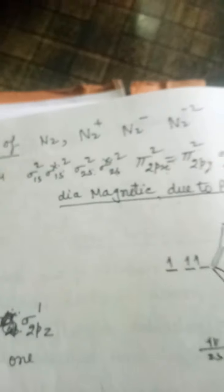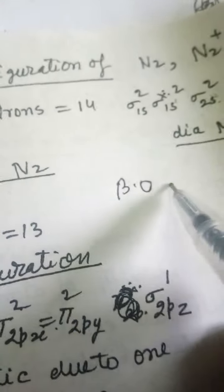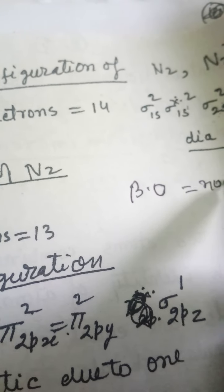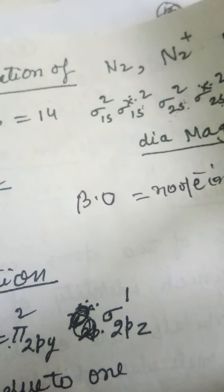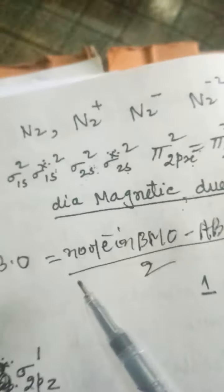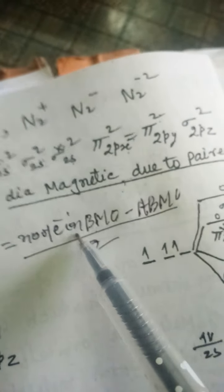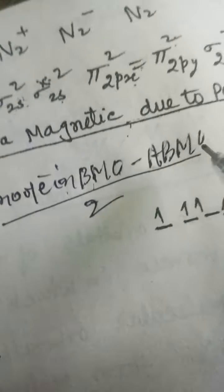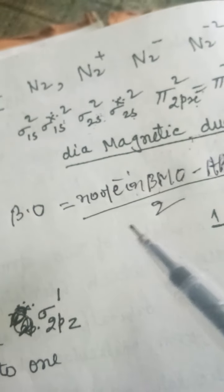The second thing is bond order — how many bonds are formed. To calculate the bond order, you can write the formula: bond order is equal to the number of electrons in bonding molecular orbitals (BMO) minus the number of electrons in anti-bonding molecular orbitals (ABMO), divided by 2. This is a very simple formula.